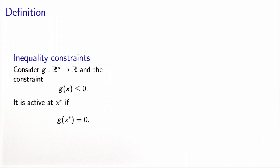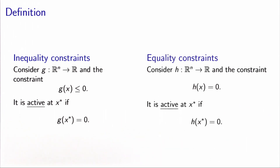The generic definition of an active constraint is the following. Consider a function g mapping ℝⁿ to ℝ, which characterizes one inequality constraint written as g(x) ≤ 0. We say that this constraint is active at x star if it is verified as an equality at x star. By extension, we call an equality constraint active if it is verified — since an equality constraint is by definition always verified with equality. But the concept is actually meaningful only in the context of inequality constraints.